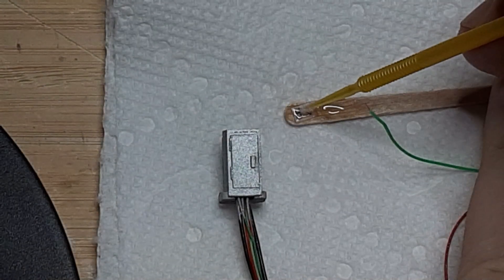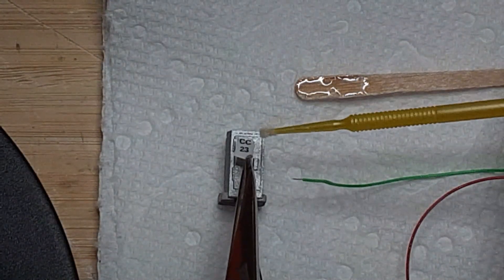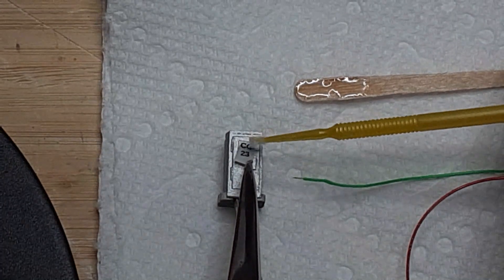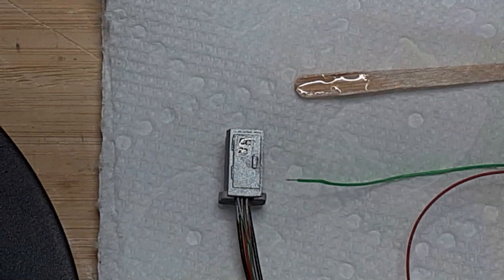Just print, seal, cut, and apply like any decal. When finished, apply a light spray of dull coat over the entire signal.